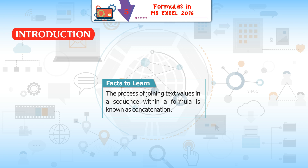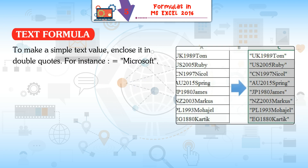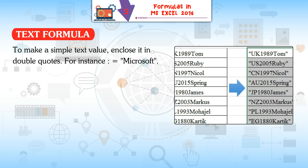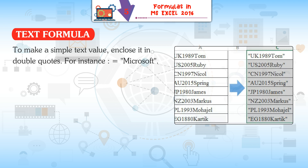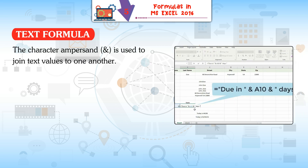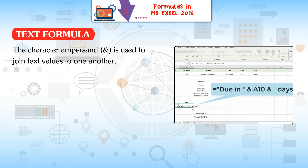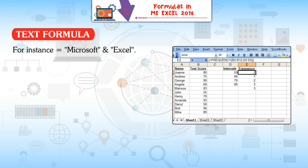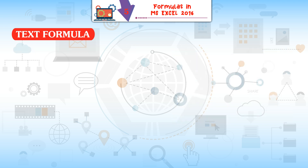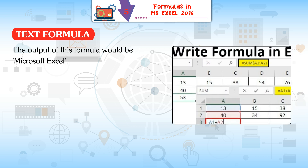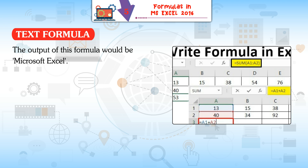The process of joining text values in a sequence within a formula is known as concatenation. Text formula: to make a simple text value, enclose it in double quotes — for instance, ="Microsoft". The ampersand character is used to join text values to one another — for instance, ="Microsoft"&"Excel". The output of this formula would be Microsoft Excel.